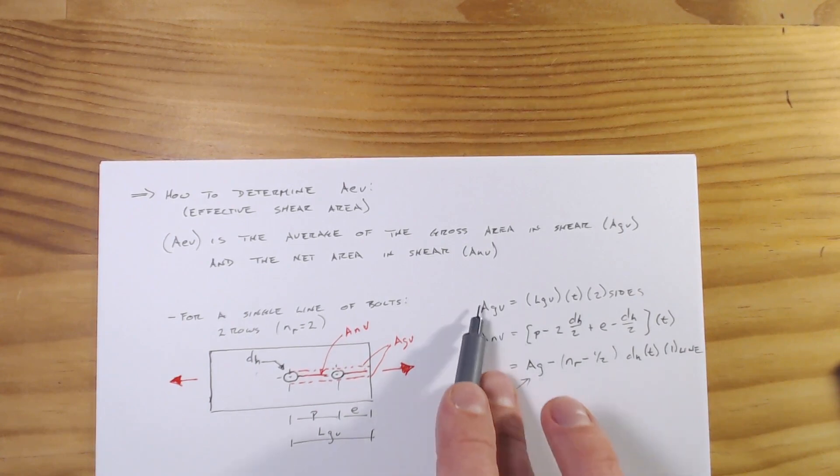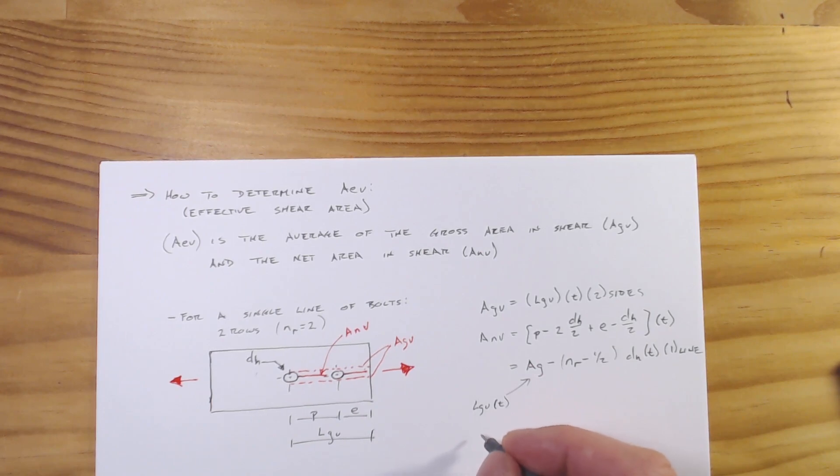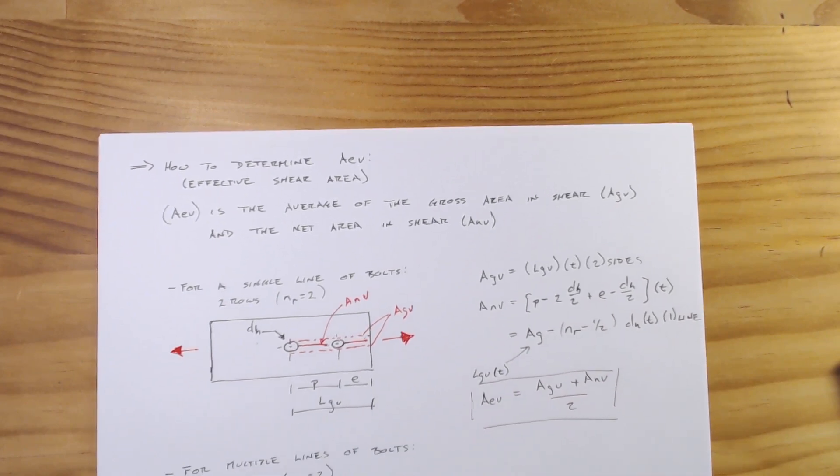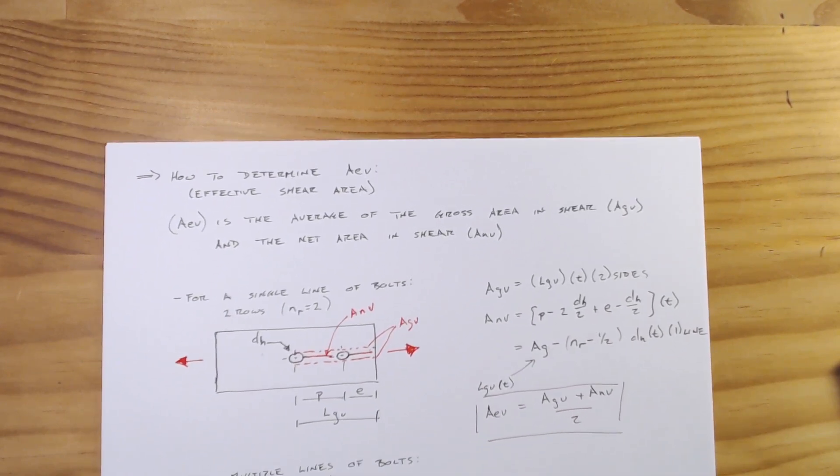So try not to confuse this with the gross area in shear. And then finally, our effective area is simply going to be A_GV plus A_NV over two. So our gross area in shear and our net area in shear.